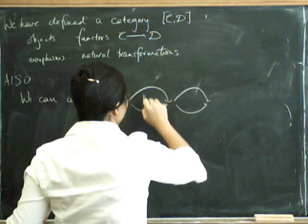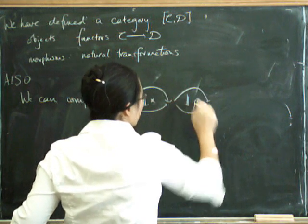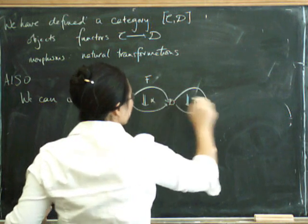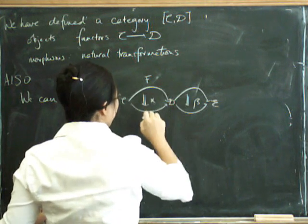We can compose horizontally in this direction. Now, this is a bit of a funny-looking composition. And it's usually written as a star. So this happens if we've got three categories.